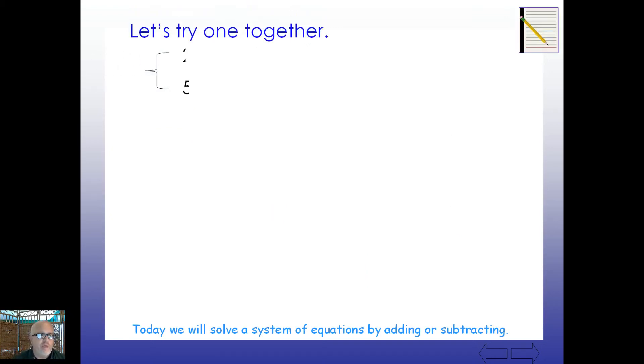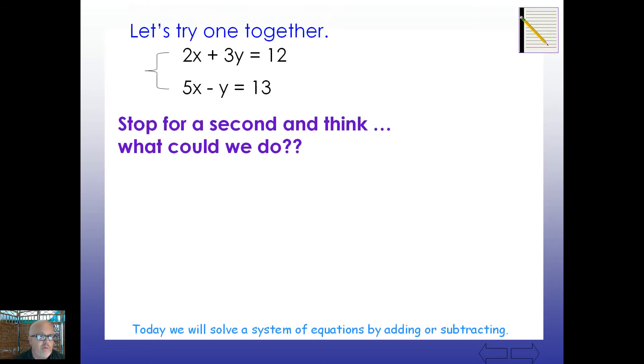All right, let's try one together. So go ahead and write this one down. 2x plus 3y equals 12, and 5x minus y equals 13. So stop for a second and think, what can we do? So let's see. If we're thinking out loud here, if we add straight down, nothing changes. We're not going to get rid of a letter. Even if we multiply by negative 1, I just get a negative 5 and a positive y, or a negative 2 and a negative 3. Nothing really helps us here.